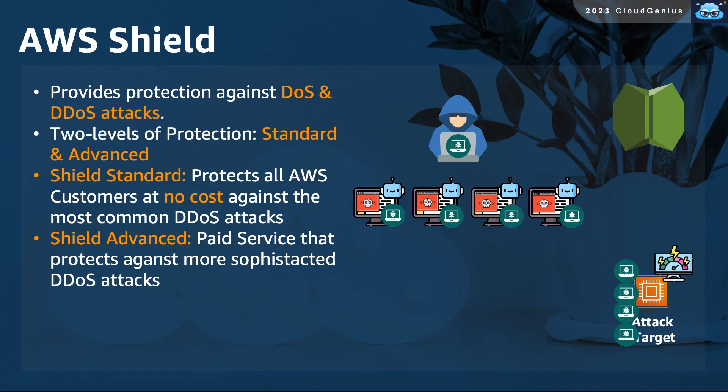AWS Shield can help stop that, causing the target to eventually crash. It is a service designed to help customers mitigate distributed denial-of-service attacks. There are two levels of Shield protection. Shield Standard is able to protect your applications against the most common and popular attacks, and is available for all AWS customers at no extra cost. However, Shield Advanced is a paid service that can be used to stop more sophisticated attacks.